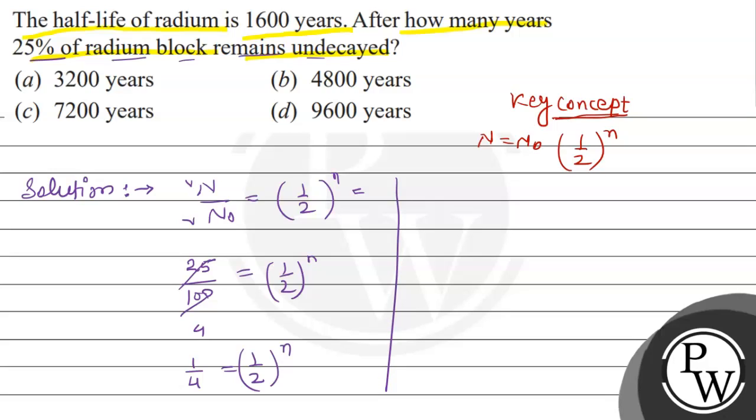And then, you can write that one by four is equal to one by two raised to power two equals to one by two raised to power n. Now, if the two sides are equal to base, then power will be equal to power. That means, n equals to how much? Two. Right?